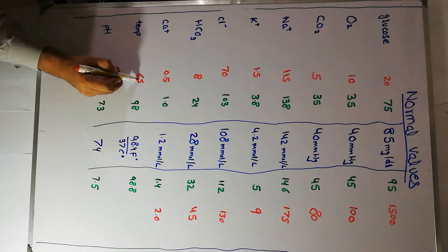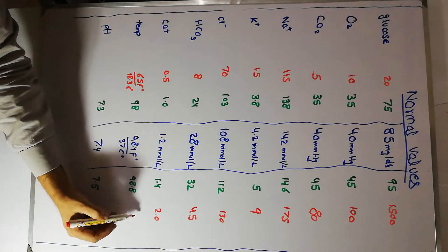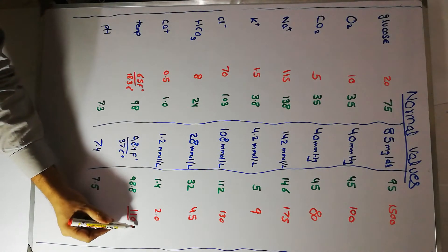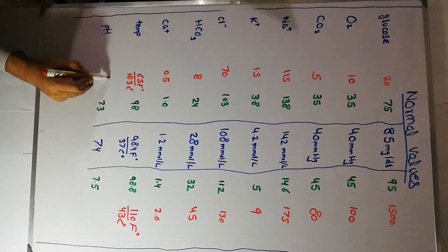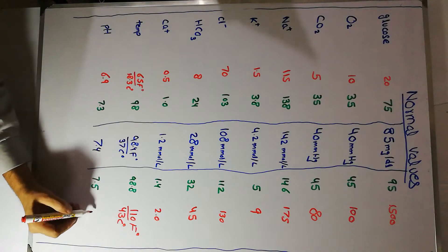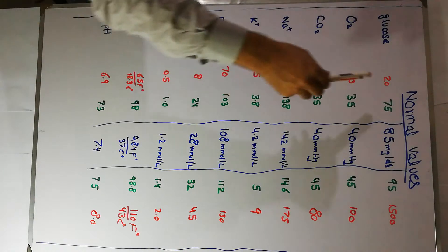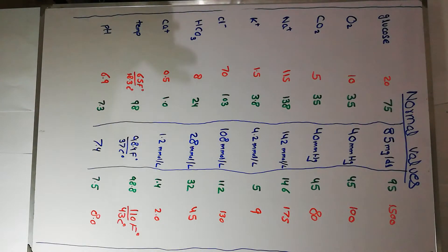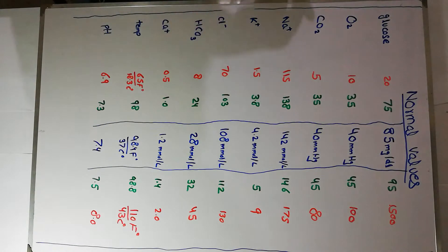Temperature: the lower survival limit is 65 degrees Fahrenheit (18.3°C) and the upper limit is about 110 degrees Fahrenheit (43°C). The pH: the lowest a human body can survive in most circumstances is about 6.9, and the upper limit is 8.0. These values represent averages agreed upon by most guidelines, with slight variation between individual associations.